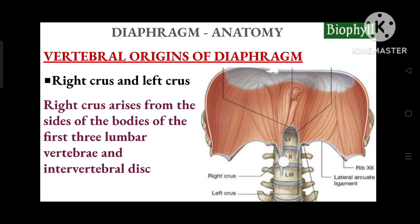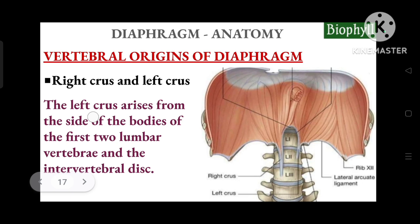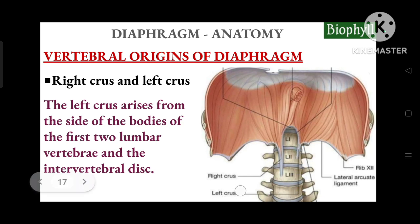The left crus arises from the sides of the bodies of the first two lumbar vertebrae — L1 and L2 — and the intervertebral disc. So the right crus involves the first three lumbar vertebrae and the left crus involves the first two lumbar vertebrae.